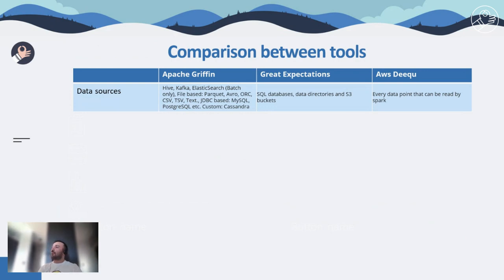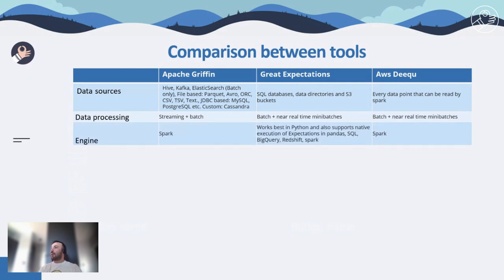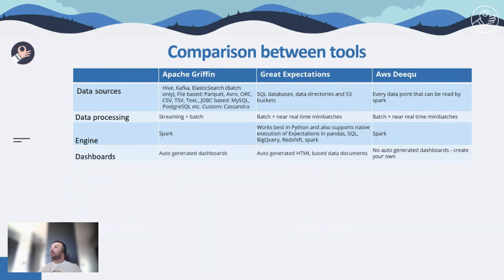Let's have a look at the comparison of the data quality solutions. In terms of diversity of data sources, AWS DQ and Great Expectations are very similar. In terms of data processing, AWS DQ and Great Expectations are able to handle batches as well as near-real-time mini-batches like Spark Streaming, whereas Griffin provides real-time streaming support additionally. In terms of engine, AWS DQ and Apache Griffin run on Apache Spark, whereas Great Expectations provides other execution options on Pandas and SQL databases. In terms of data quality dashboards, Griffin and Great Expectations provide auto-generated data quality dashboards.